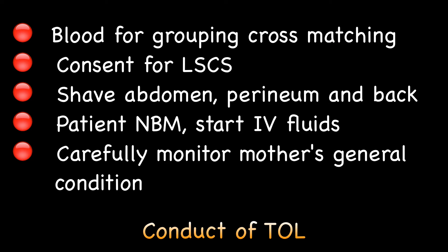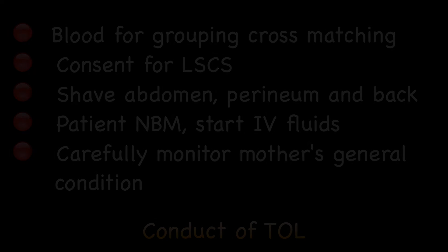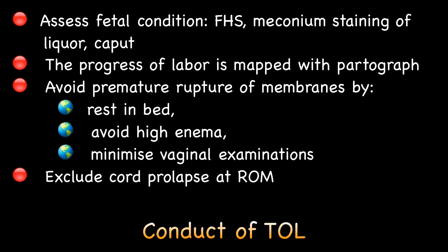I will now discuss important points in the conduct of a trial of labor in contracted pelvis. With the patient admitted in a tertiary care hospital: first, collect blood for grouping and cross-matching; take consent for LSCS; shave abdomen, perineum and back; the patient should be nil by mouth and IV fluids should be started; carefully monitor the mother's general condition; assess the fetal condition by recording fetal heart sounds, preferably with an electronic fetal monitor; check for meconium staining of liquor at ruptured membranes and for caput.